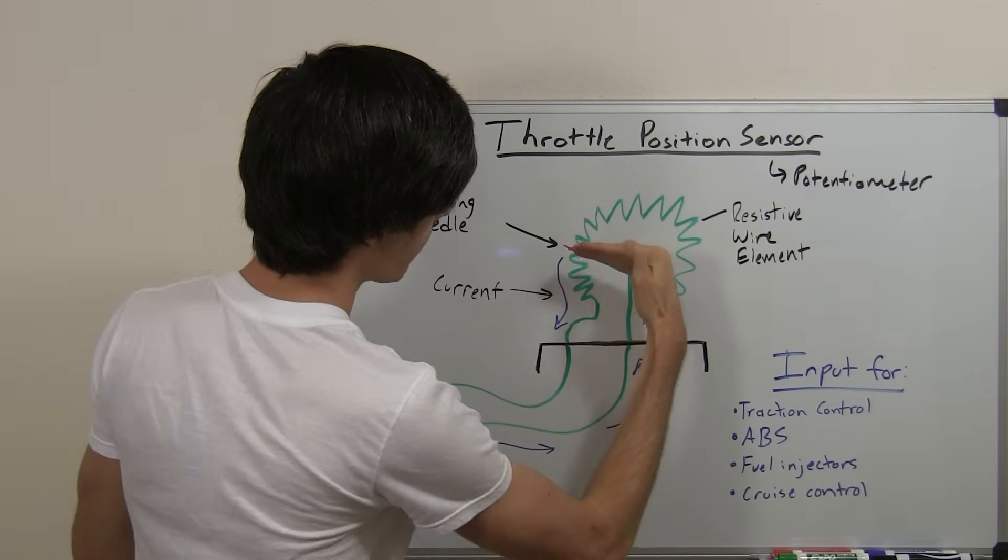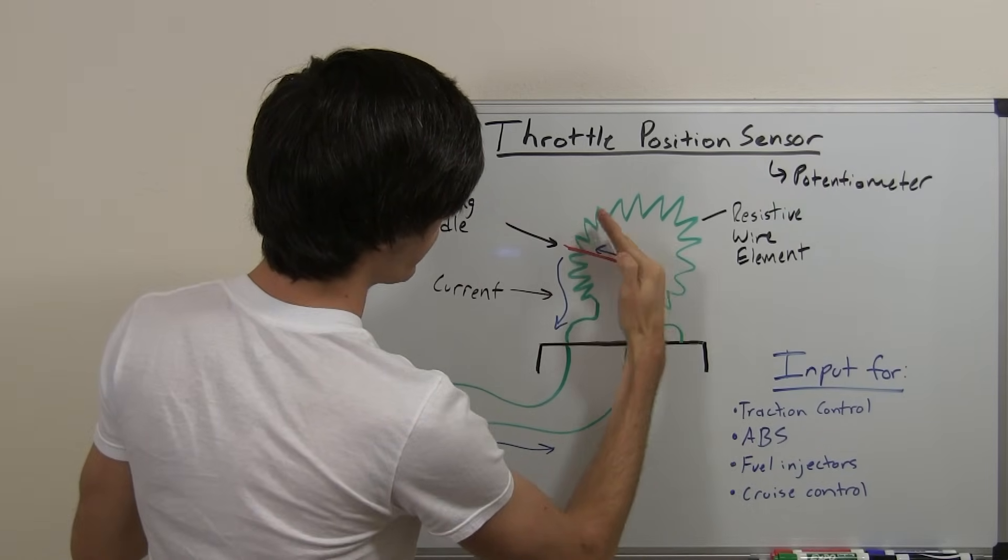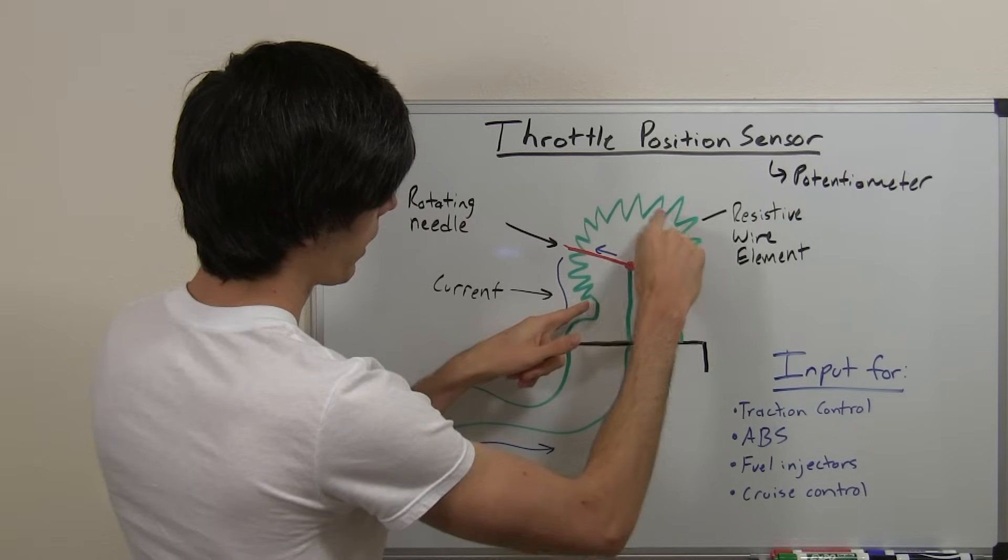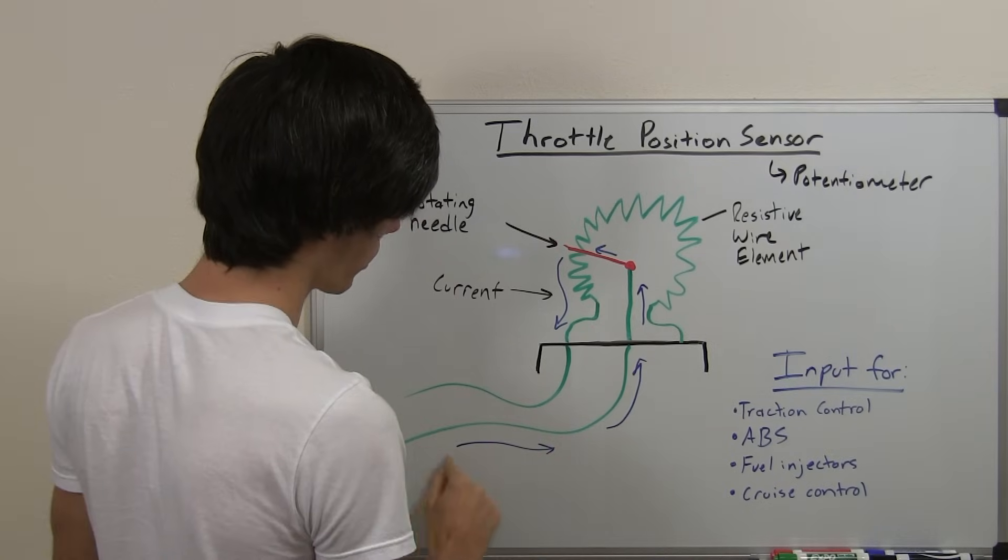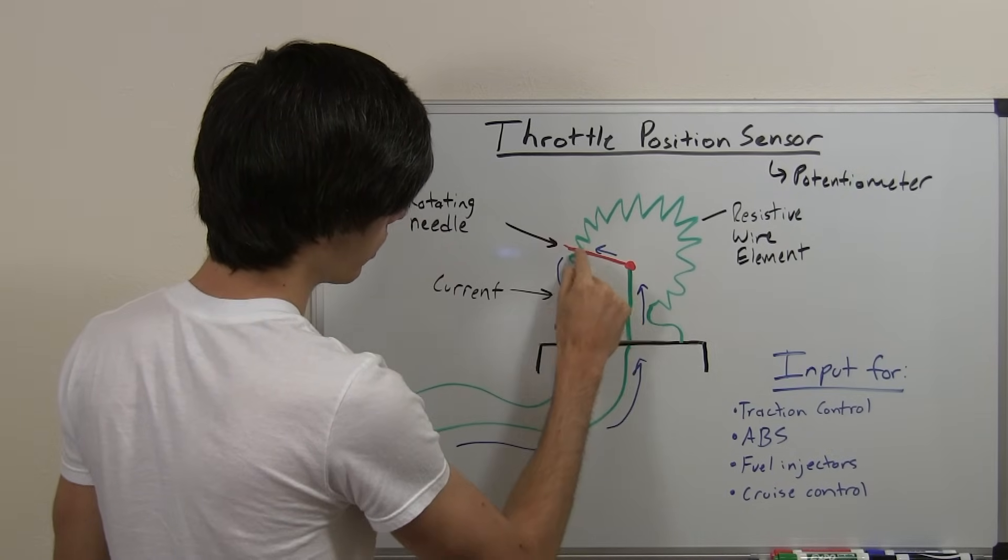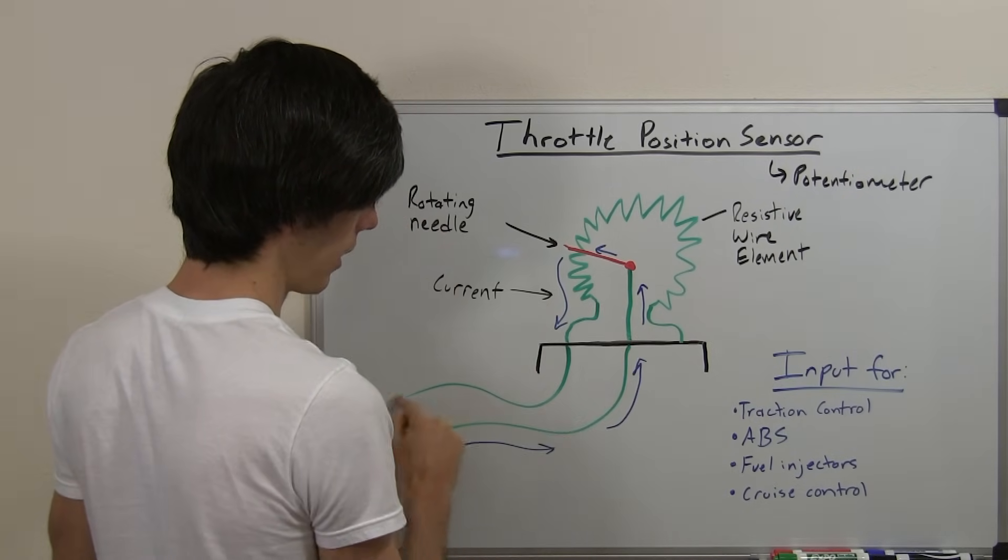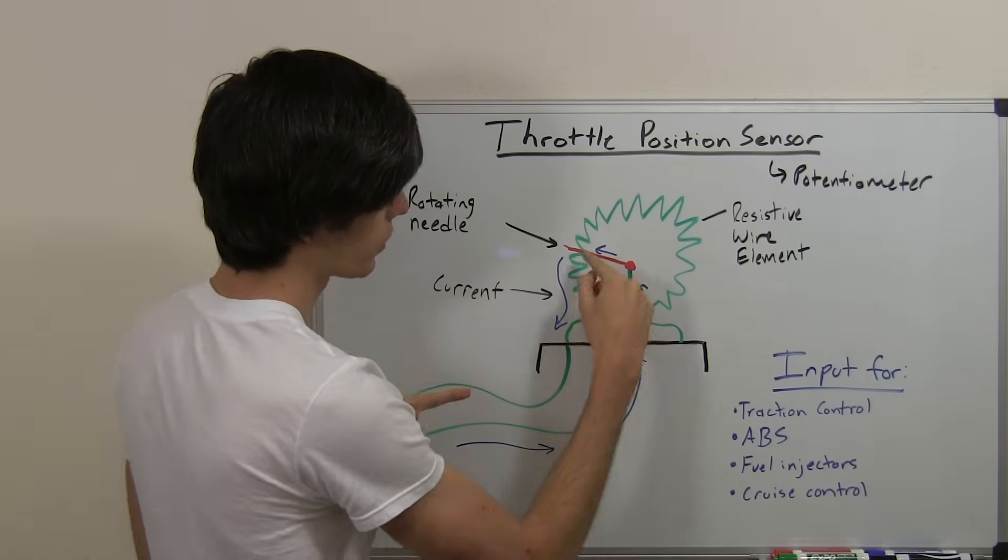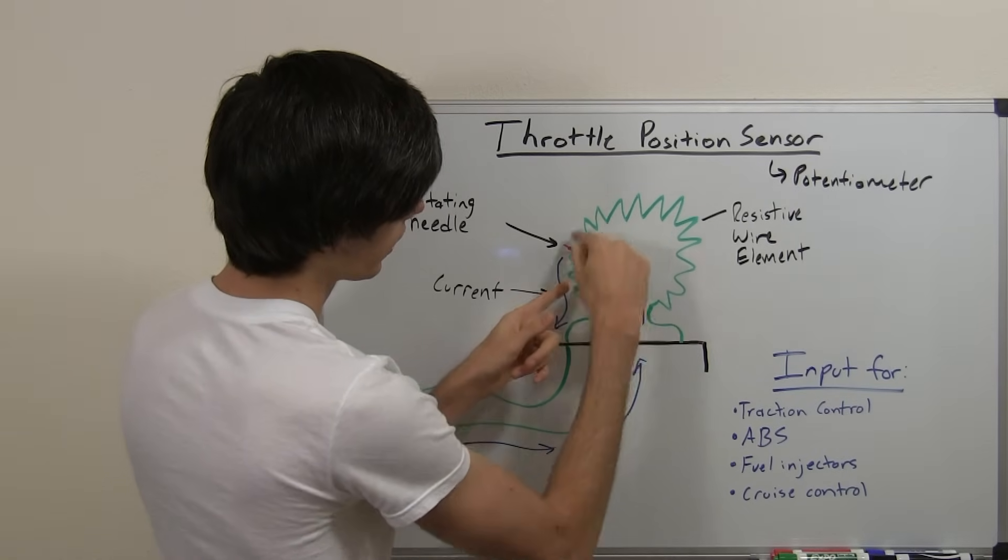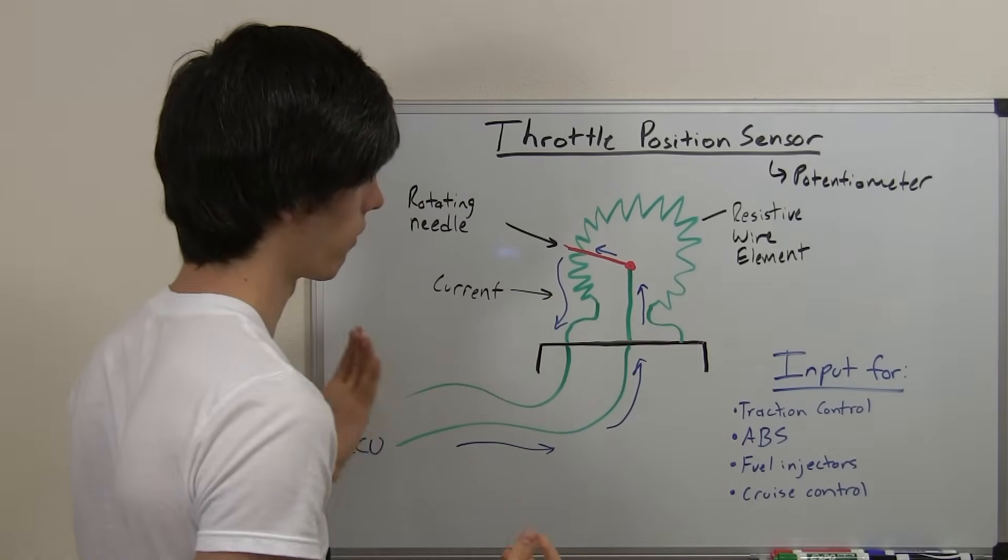So what happens is, as you move that needle up, it has to pass through more of this resistive wire element. So the current is going to come through, go through this needle, and then pass through this resistive element and back to the ECU. Now, when you change the path that it has to take, and you add resistance, you're going to have a voltage change.